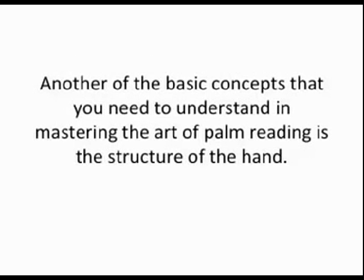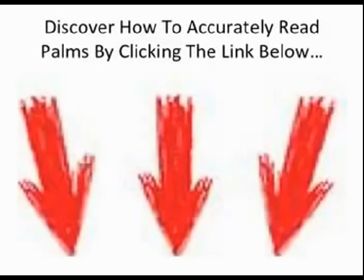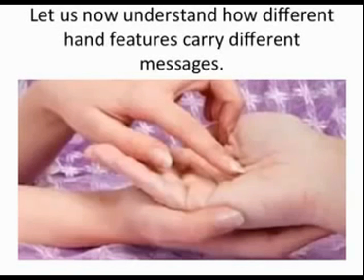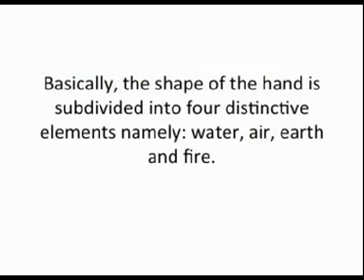So let's talk about understanding the structure of the hand. Another basic concept you need to understand in mastering the art of palm reading is the structure of the hand. Different hands will have different sizes and shapes, and all of those factors can be used to interpret one's destiny. Different hand features can carry different meanings and messages. First of all, the shape of the hand is subdivided into four distinctive elements.